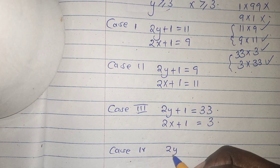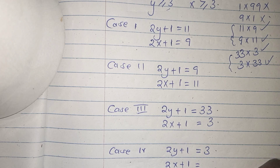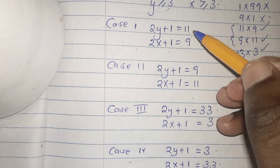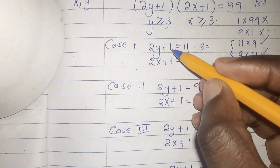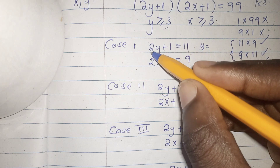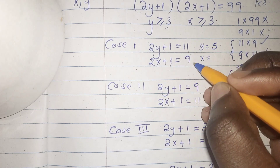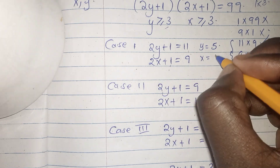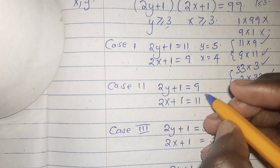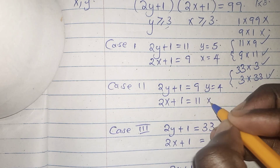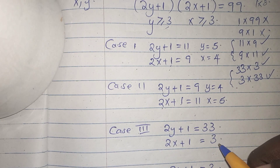Case 4: 2y plus 1 equals 3, 2x plus 1 equals 33. Solving Case 1: y equals 10 divided by 2, so y equals 5; x equals 8 divided by 2, so x equals 4. Solving Case 2: y equals 8 divided by 2, so y equals 4; x equals 10 divided by 2, so x equals 5.